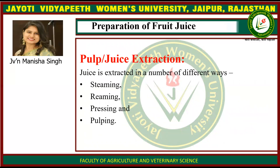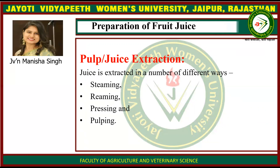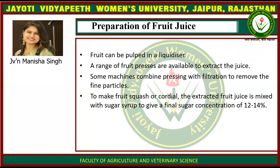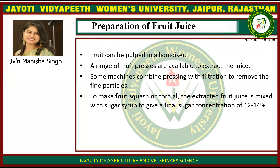Pulp or juice extraction: juice is extracted in a number of different ways — steaming, reaming, pressing, and by pulping. Fruits can be pulped in a liquidizer. A range of fruit presses are available to extract the juice. Some machines combine pressing with filtration to remove fine particles.